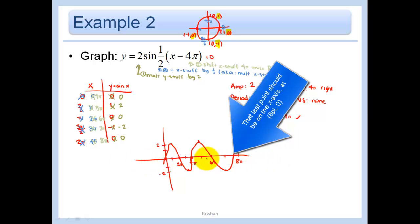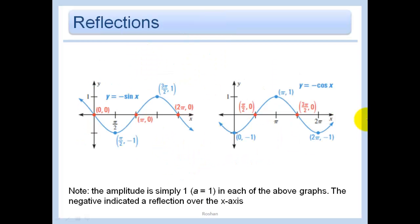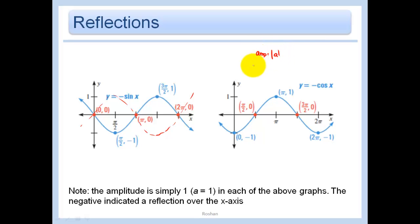Our domain is all real numbers. Our range in this case is just negative 2 to 2 because our amplitude was 2. Now when we do reflections, all we do is everything that was up goes down and everything that was down goes up. Because our sine graph just looks like this, and negative sine is just the reflection over the x-axis. Note one thing: the amplitude is never negative. The amplitude is defined as the absolute value of a because it's a distance — it's never negative. This graph is an amplitude of 1, reflected.